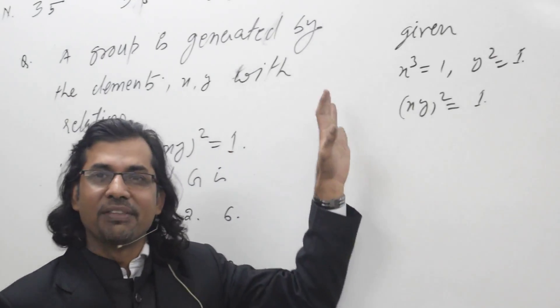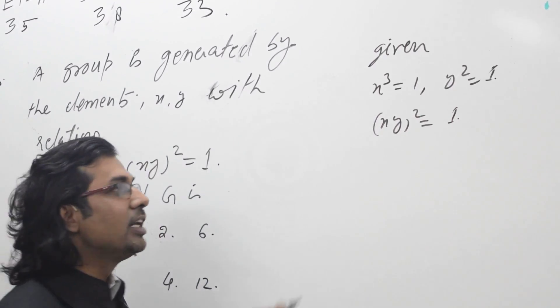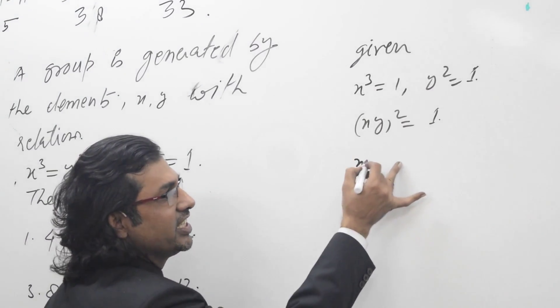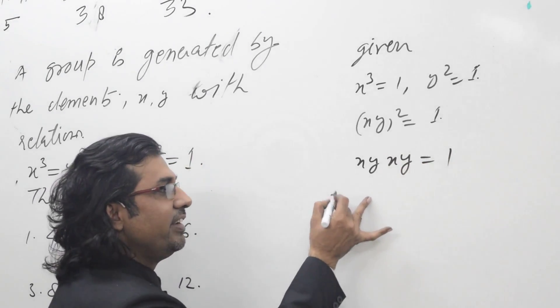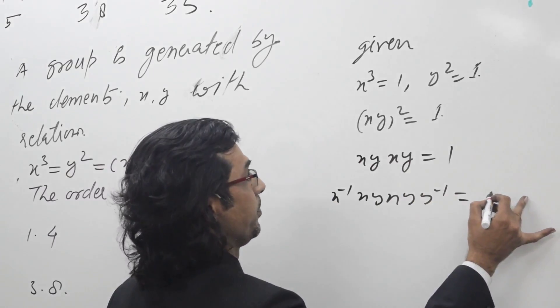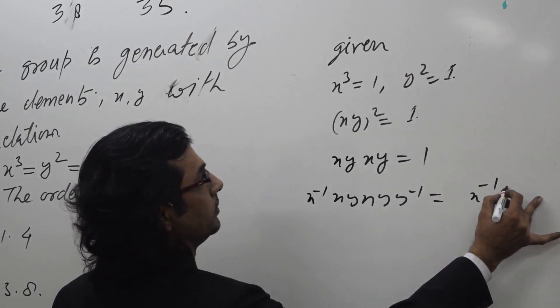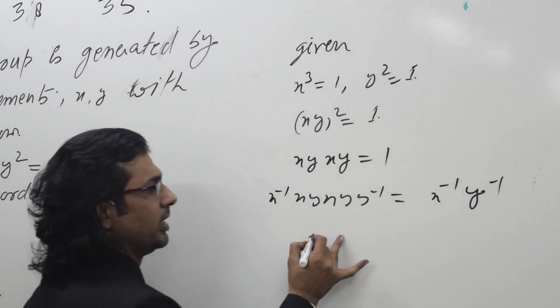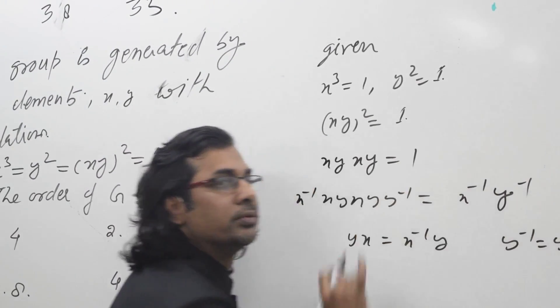So how to start with this question? First of all, these are the given information. We try to develop a relation between x and y like this. This is given as 1, and then when we operate this, we get here x inverse y inverse, which is nothing but yx equal to x inverse y, as y inverse equal to y.